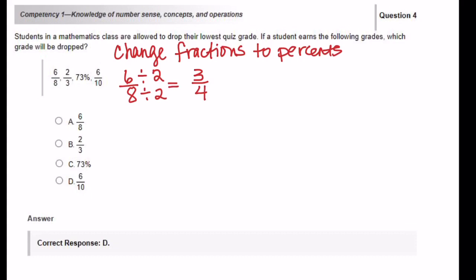6 over 8 can be simplified to 3 fourths by dividing both the 6 and the 8 by 2. Now what you have to know about percents is that all percents are out of 100. So the good thing about 3 fourths is that I know that that number 4 can go into 100 evenly. So what number can I multiply 4 by to get 100? That number is 25. So if I multiply the 4 by 25, I have to multiply the 3 by 25. And so now I have 75 over 100, or I can write it as 75 percent. So let's take answer choice A, which is 6 over 8. Let's rewrite that as 75 percent.